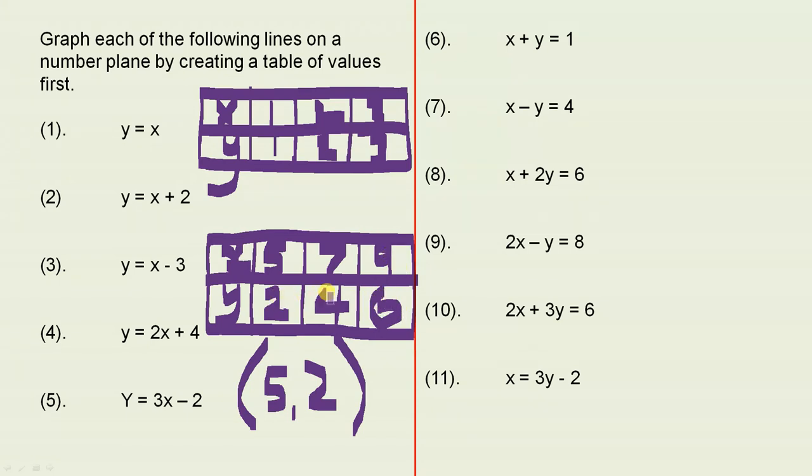So when you plot these three points on the number plane, you join them together, and that gives you the line. And it's exactly the same with all the other examples.